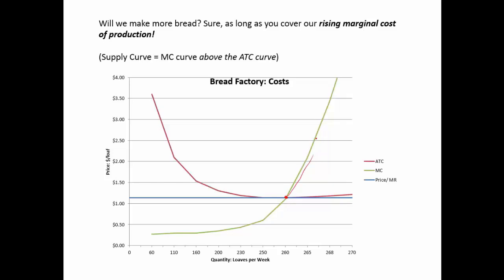My costs are rising right here. So in order to produce more, I'm going to have to have that price rise. If the price rises, I will produce more. And if the price rises again, I will produce more. So my output is going to be governed by this rising cost curve, and the only way to get me to produce more bread is to have the price rise. So that constitutes the supply curve.